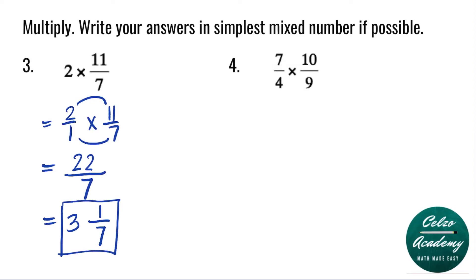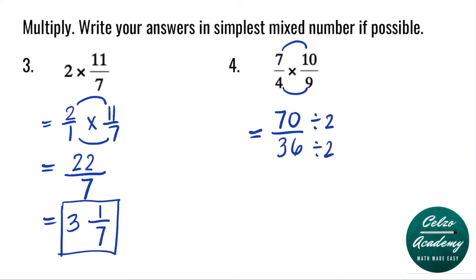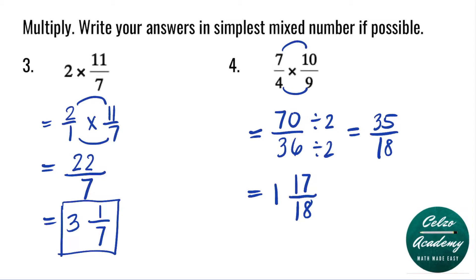Question number 4: 7 over 4 times 10 over 9. Step 1, multiply 7 and 10 — that's 70. Step 2, multiply 4 and 9 — that's 36. Both 70 and 36 can be divided by 2: 70 divided by 2 is 35, and 36 divided by 2 is 18. Converting to a mixed number: how many 18s go into 35? 1 time — 1 times 18 is 18, remainder 17. So the answer is 1 and 17 over 18.